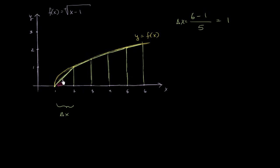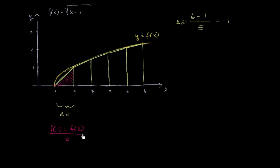For this first shape — really a triangle — the area of a trapezoid is the average of the heights of the two parallel sides, times the base. So it's f(1) plus f(2), all over 2, times delta x. Since f(1) is just 0, this simplifies to f(2) times the base times one-half, which is just the area of a triangle.